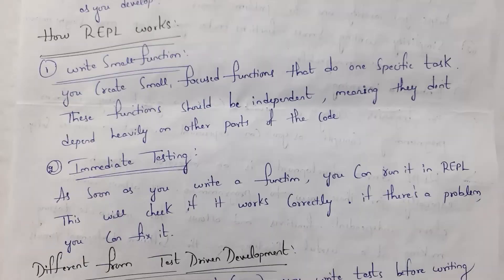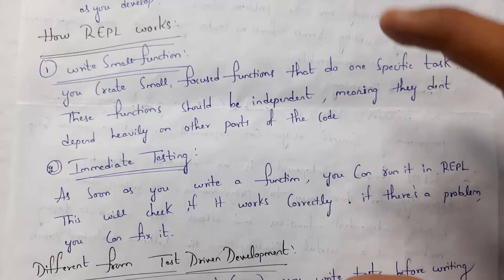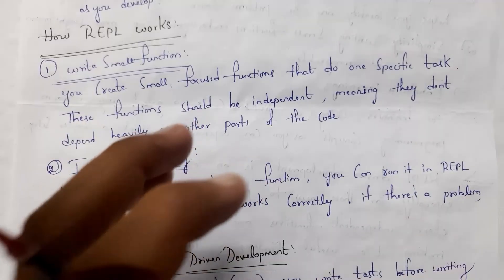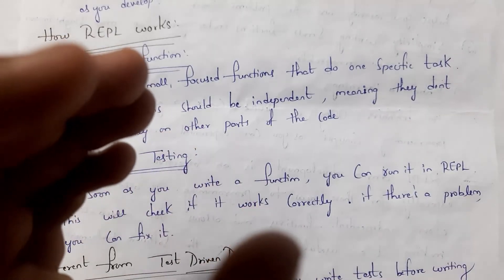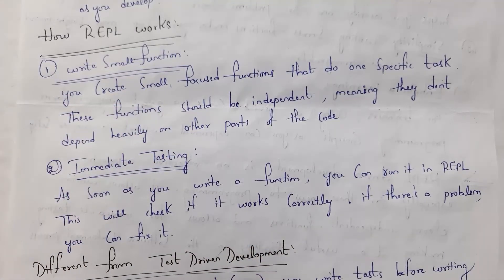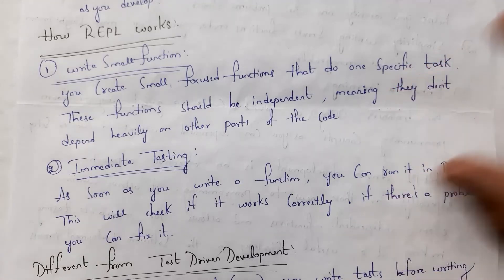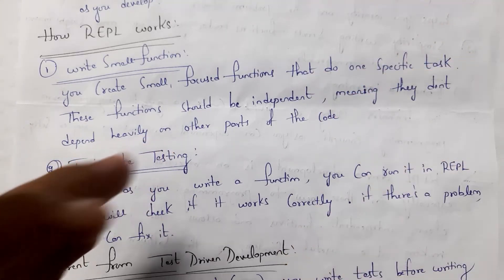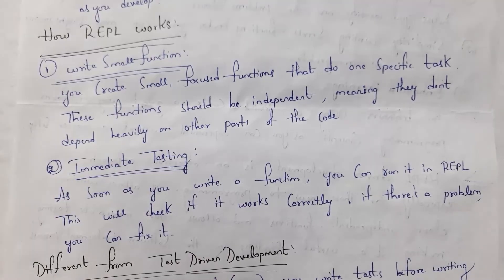This is how REPL works. The first step is to write a small function. For example, if I want to develop a website, I first create one simple independent function — such as a user login form — and this function must not depend on any other part of the code. The second step is immediate testing. After writing that specific part of code, immediately open the REPL software and perform testing on that function. You can write code in any programming language like Python, Ruby, or JavaScript, and immediately see the results. If there is any problem with the code, you can easily fix it.